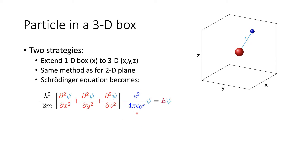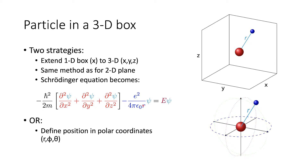We also need to add in the potential energy term. Initially this looks very complicated because we have our x, y, and z components to determine, and from those we need to calculate the r distance to determine the potential energy. An alternative approach is to move to a different coordinate system, like we did with the particle rotating on a ring. So we define the position in terms of polar coordinates — r, phi, and theta — of the position of the electron around the nucleus. The nucleus, by definition, sits at the center of that polar system.